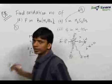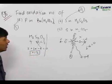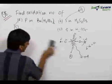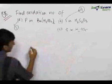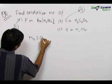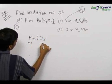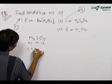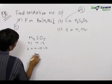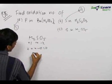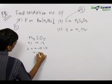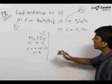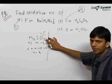In such doubtful cases you should always draw the structure and find out the oxidation number. Again in the case of H₂SO₅, if we assume hydrogen to be plus 1, oxygen to be minus 2, and sulfur to be x, we get 2 plus x minus 10 is equal to 0, that is x is equal to 8. But again this is the wrong answer because we have made a mistake in assuming the oxidation number of one of the atoms.